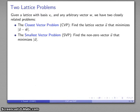Obviously these two are very similar. The only difference is the smallest vector problem is the closest vector problem where we're trying to find the zero vector as our target.